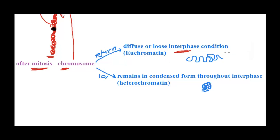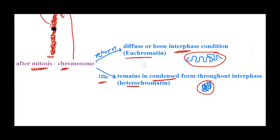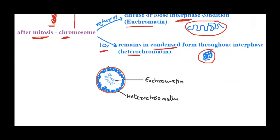One possibility is it returns to a loose, interphase form that we see in the center of the nucleus — that is the euchromatin form. Approximately 10% of the chromosome would remain in a highly condensed form even after returning to interphase; that is called heterochromatin. When we observe the interphase nucleus under the microscope, near the nuclear envelope we see densely, darkly stained, highly condensed chromatin — that is the heterochromatin, and it is transcriptionally inactive.